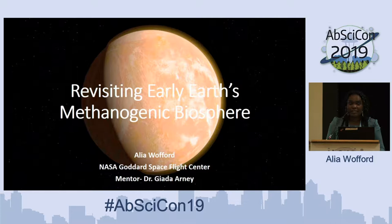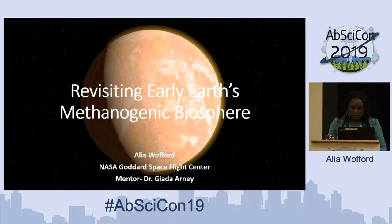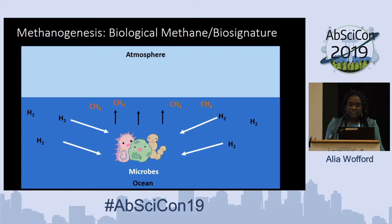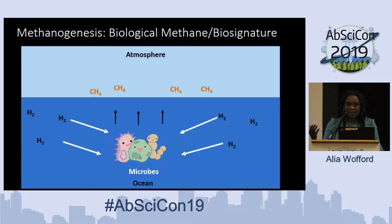Today I'm going to be talking about revisiting early Earth's methanogenic biosphere. If you think about early Earth, you could think of it as like an exoplanet or a laboratory in which you can explore possible ranges of biospheres and see what the atmospheric composition of these terrestrial planets would look like. When we think about early Earth, we think about methane. Methanogenesis is one way we can create methane — microbes take in hydrogen molecules, synthesize methane in their bodies, release it into the oceans, and it makes its way into the atmosphere. This is called biological methane production, and we can use it to look at biosignatures.